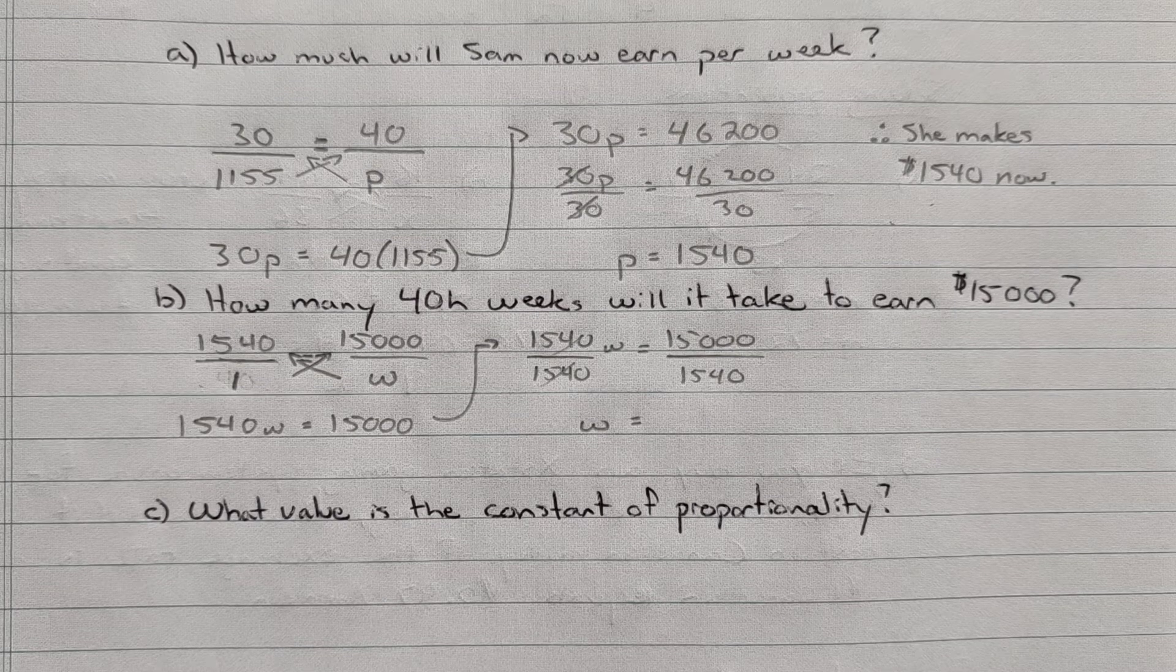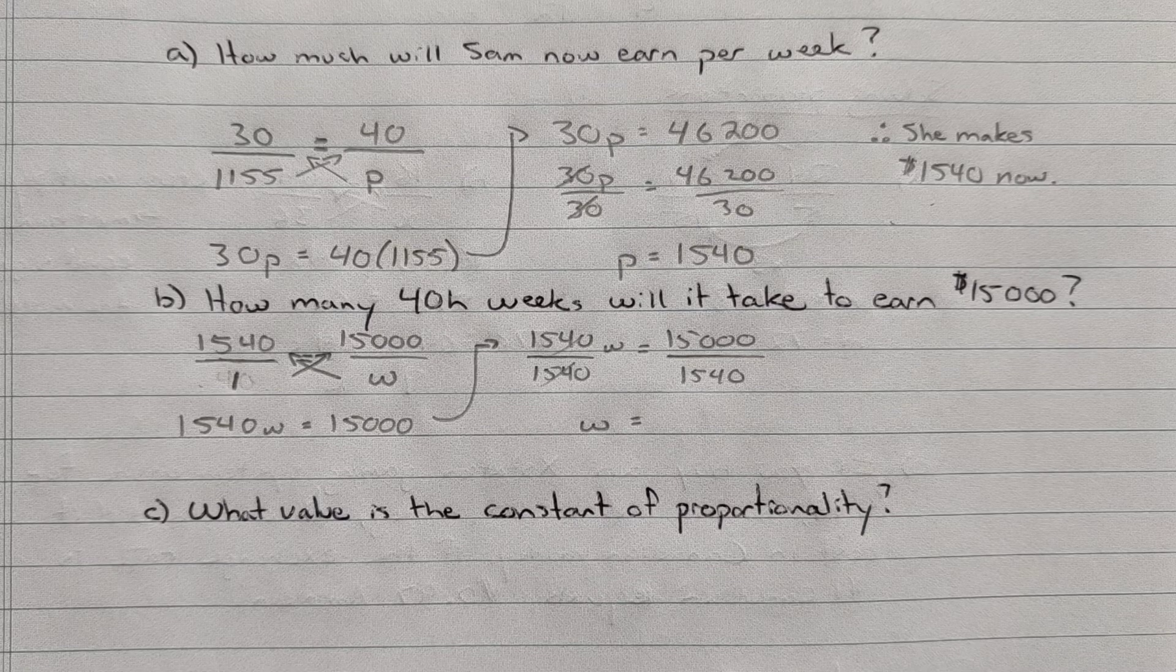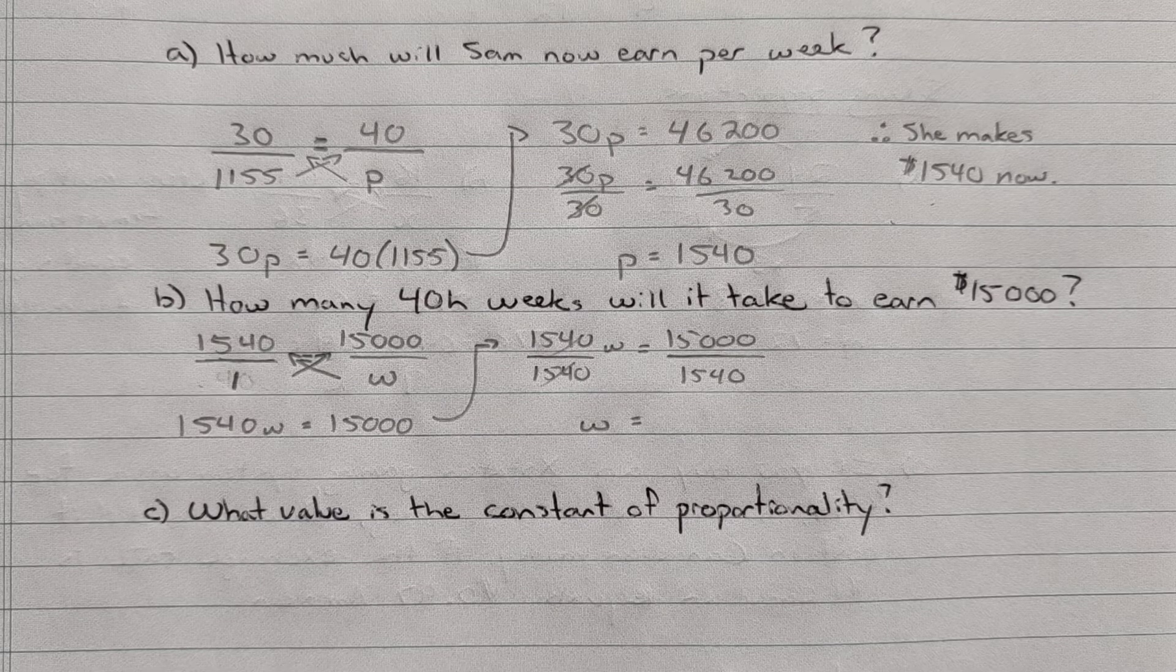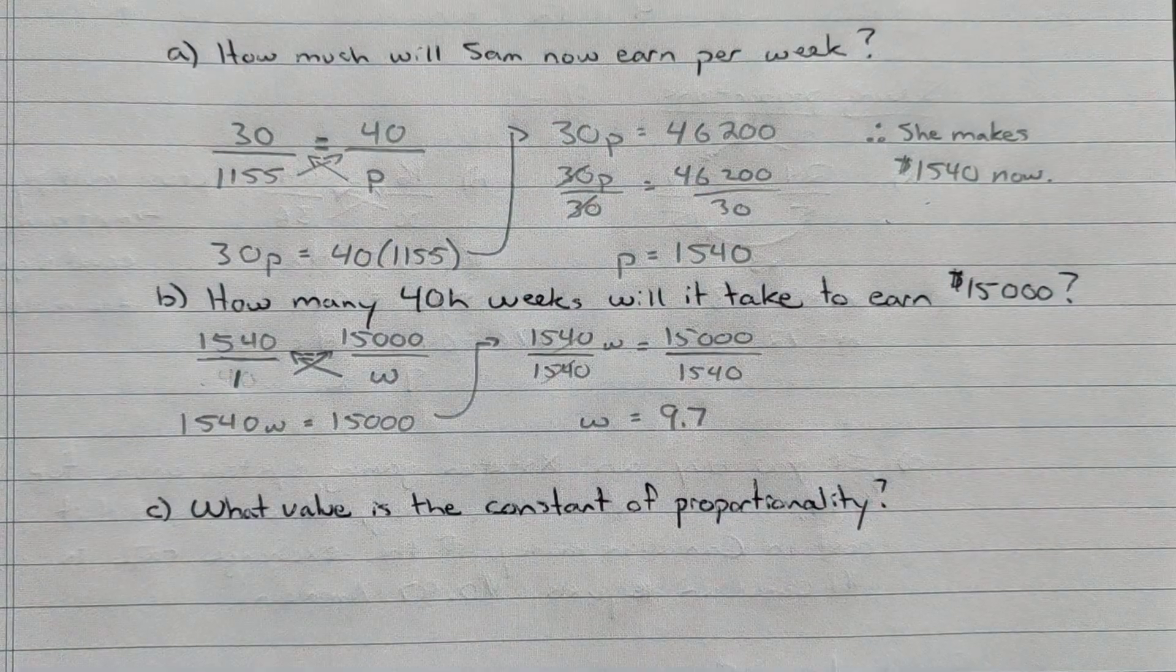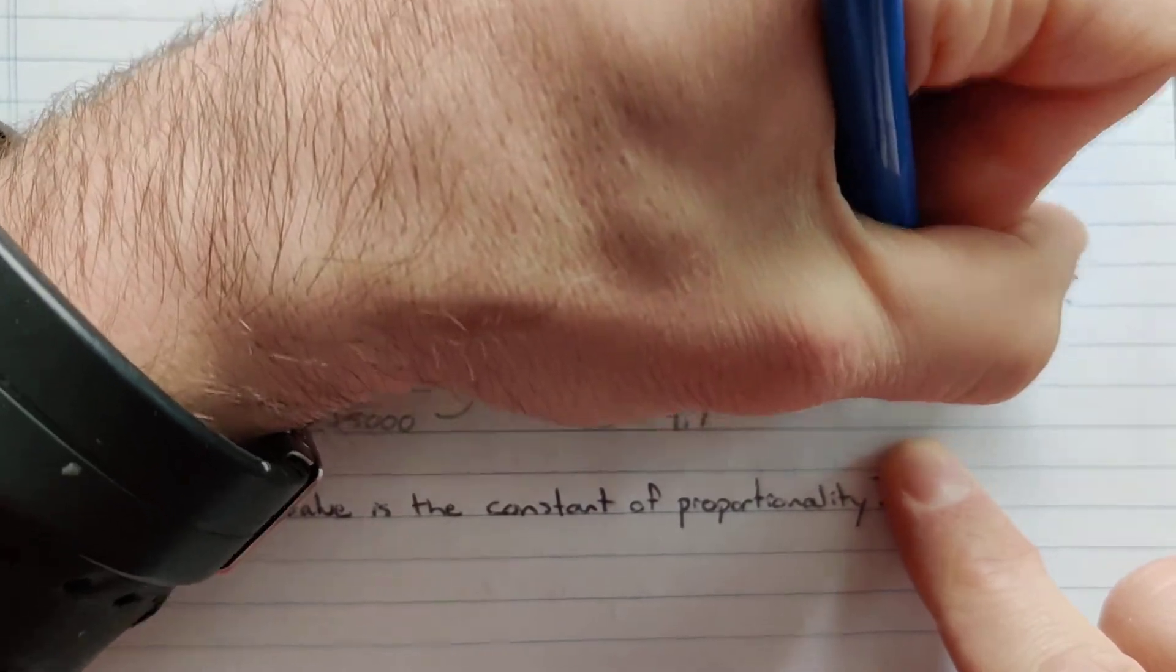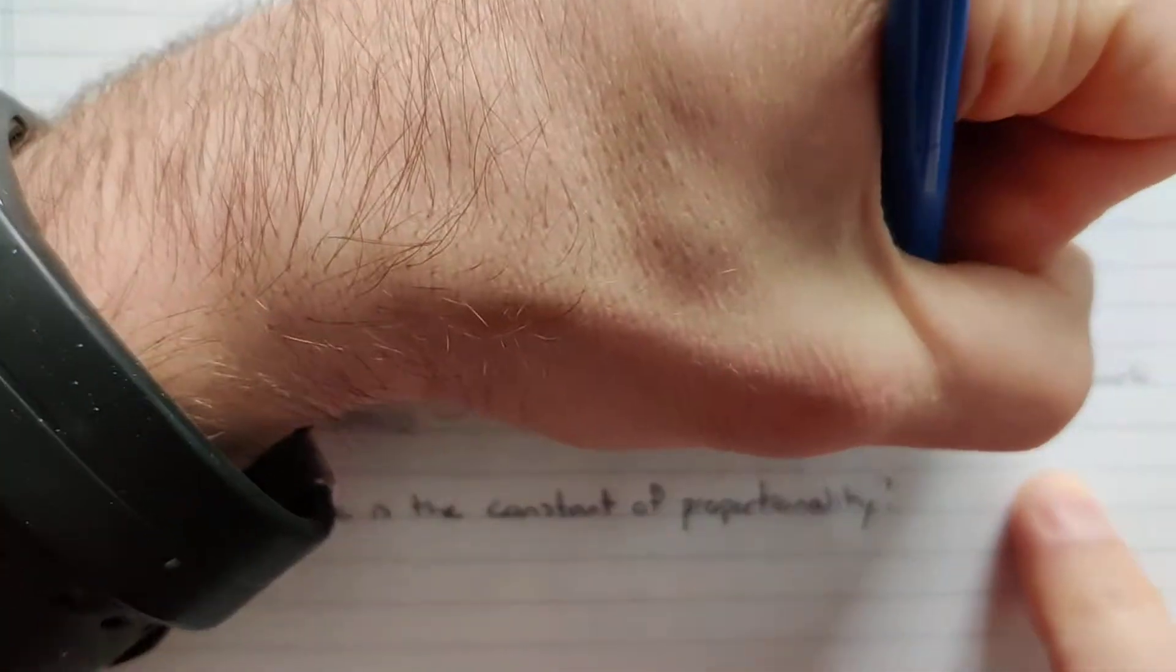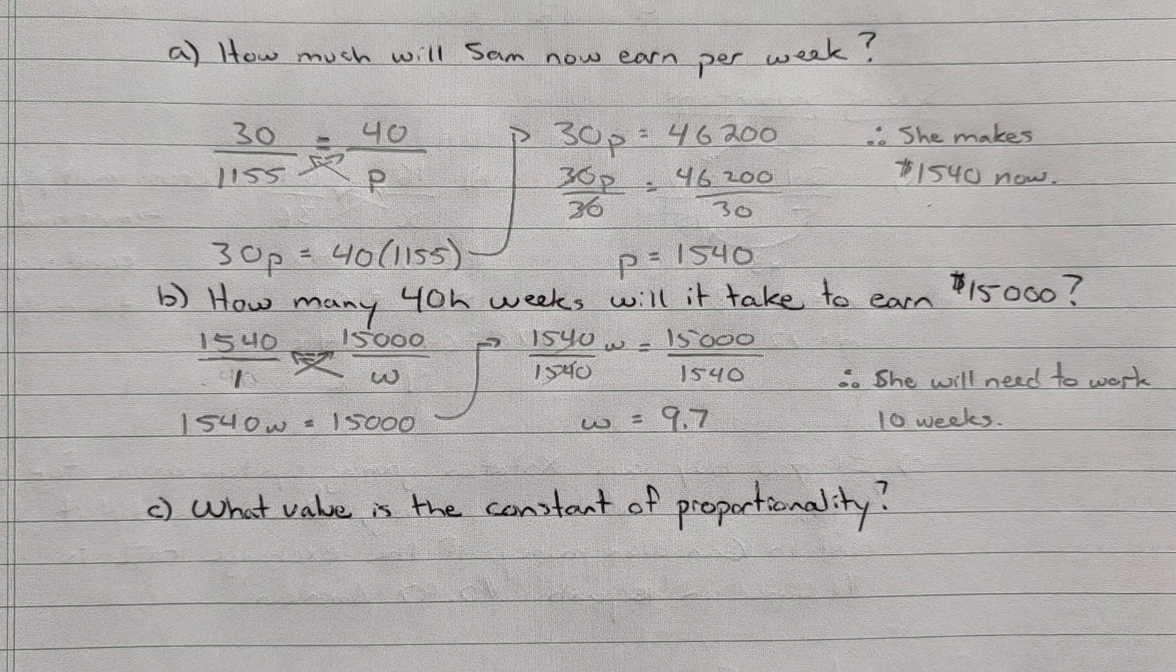So let's divide this out. 15,000 divided by 1,540 and I get 9.7 approximately. So she's going to have to work 10 weeks to get the value. And we just round that up because she's going to end up working the full week.